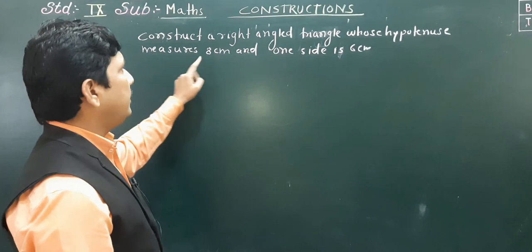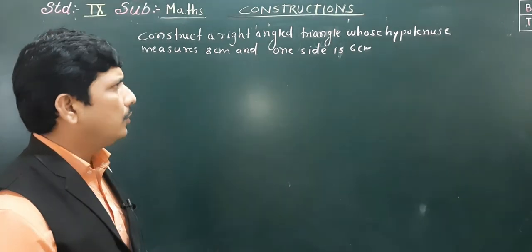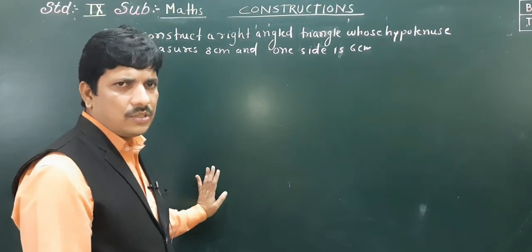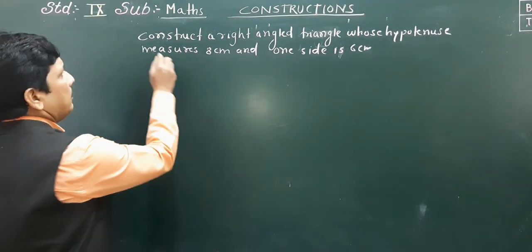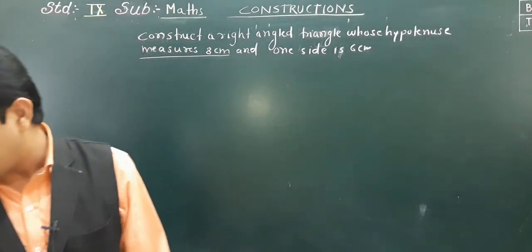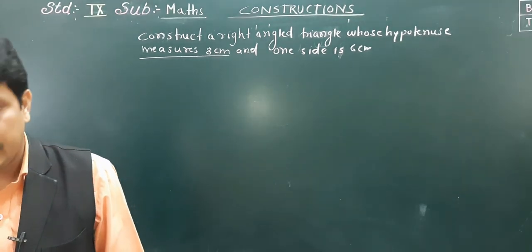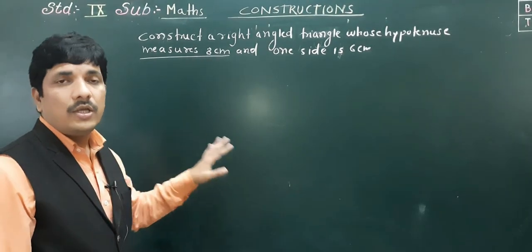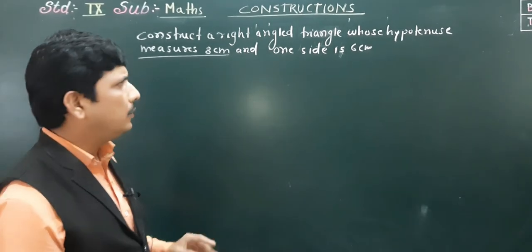The hypotenuse is given as 8 centimeters and one side is 6 centimeters. The hypotenuse is the side whose length is greater than the other two sides, or the square of the hypotenuse equals the sum of the squares of the other two sides. With 8 cm and 6 cm given, we can also find the third side using Pythagoras.